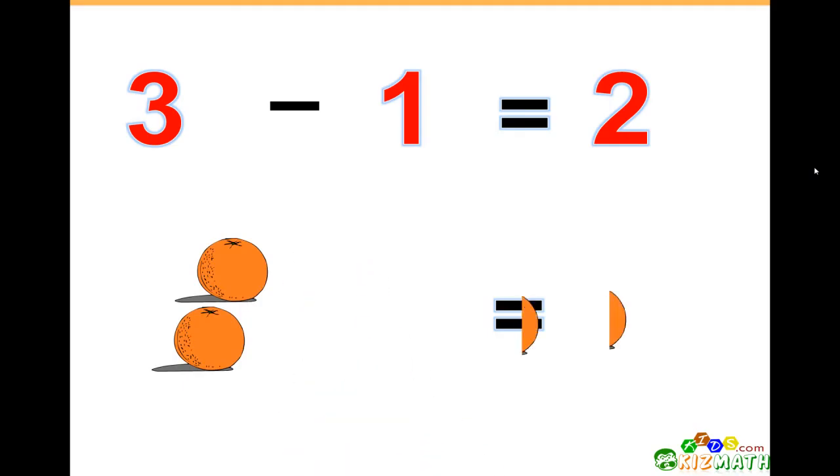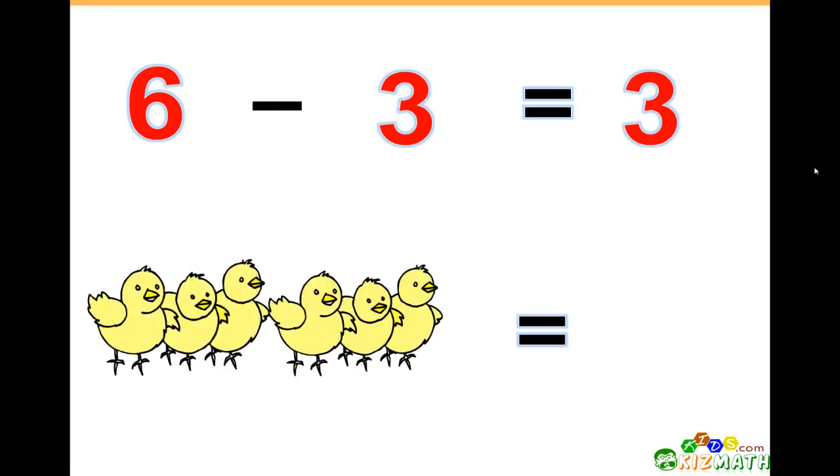6 minus 3 equals 3. We have six birds. If we take away three of those birds, there are only three birds left.